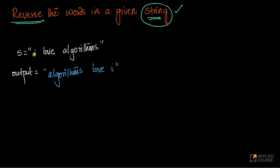Imagine if I have a string like 'I love algorithms'. I want to reverse the words in the string — I want the last word to become the first word, the last but one to become the second, and this to become last. I'm not reversing the whole string; my resultant string is not S, M, H, T, I, R, and so on. I want to reverse the individual words in a given string.